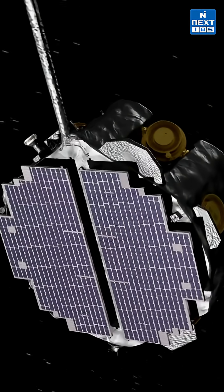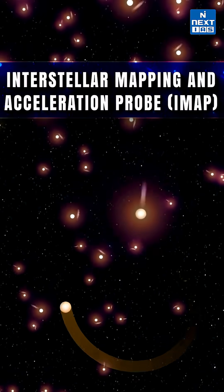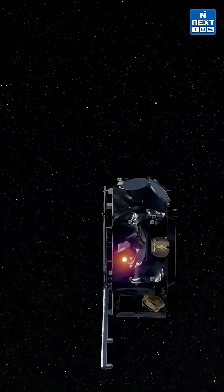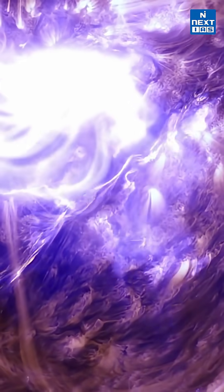NASA launched the IMAP Interstellar Mapping and Accelerator Probe on September 24 to map the heliosphere's boundary, trace energetic particles, and improve space weather forecasting as well.